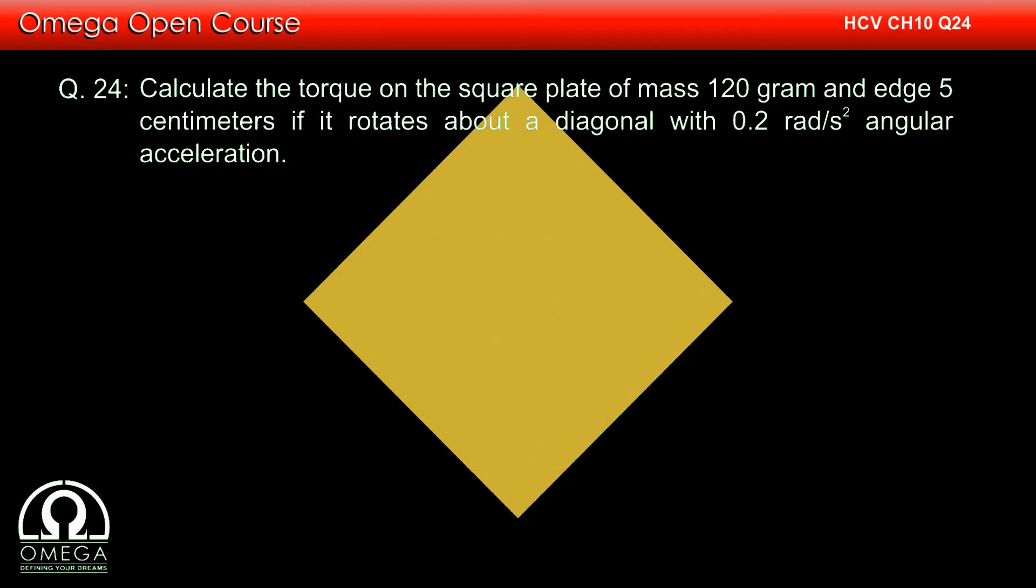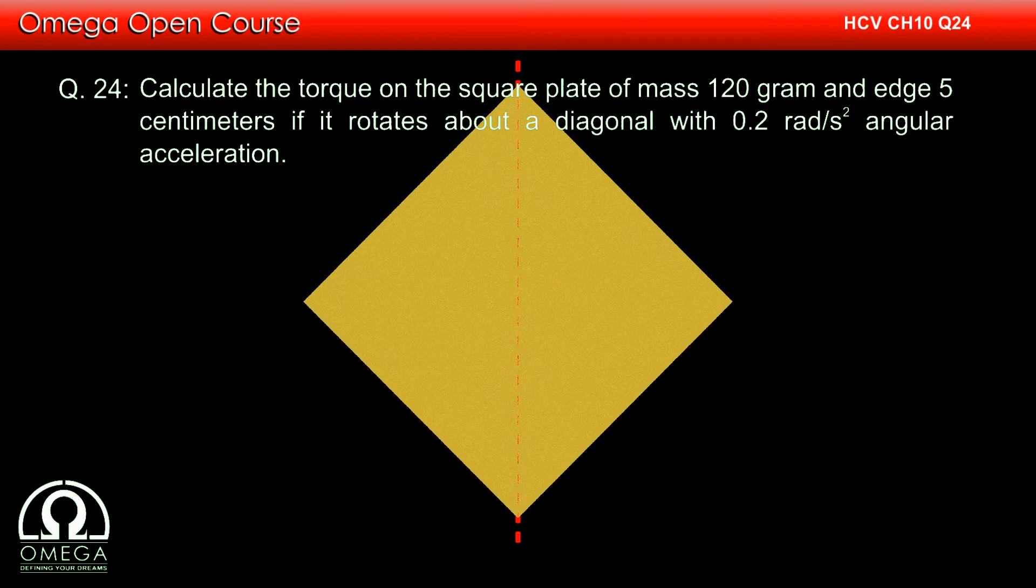Calculate the torque on a square plate of mass 120 grams and edge 5 centimeters if it rotates about a diagonal with 0.2 radian per second squared angular acceleration.